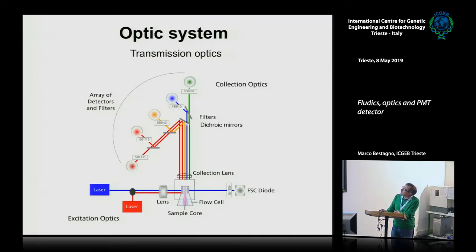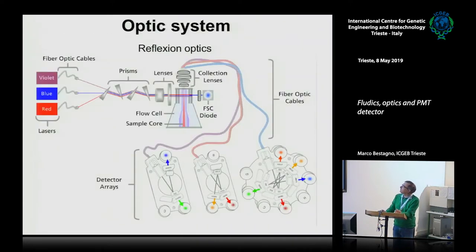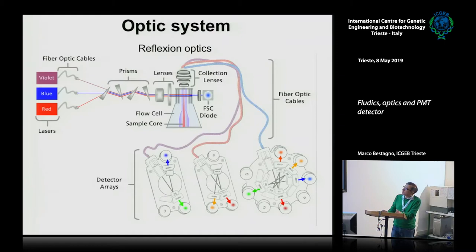In a transmission optics system, the last detector receives light that has crossed multiple filters, resulting in dispersion and reduction of signal intensity. This system can be used when the number of detectors is small, but with more complex instruments having several detectors, there is a progressive reduction of signal. Therefore, more complex instruments use reflection optics. In this case, light is drawn to the interrogation point by means of optical fibers to reduce light dispersion, and then collected by lenses and drawn by fiber optics to the detector array.